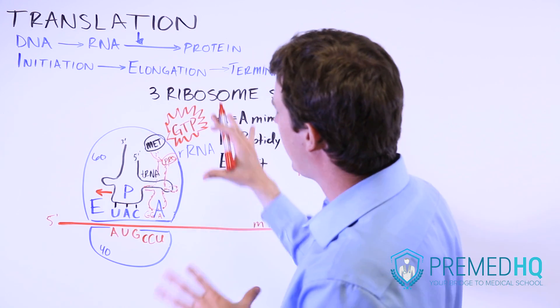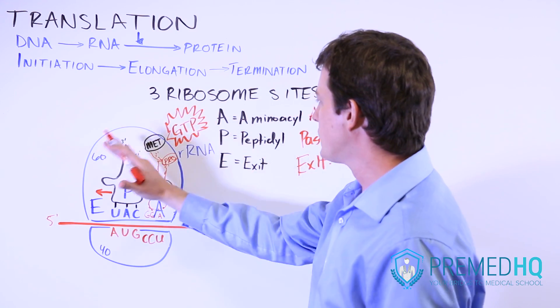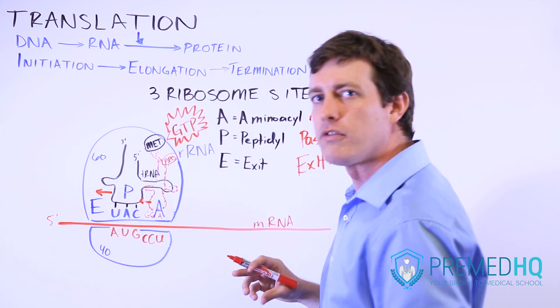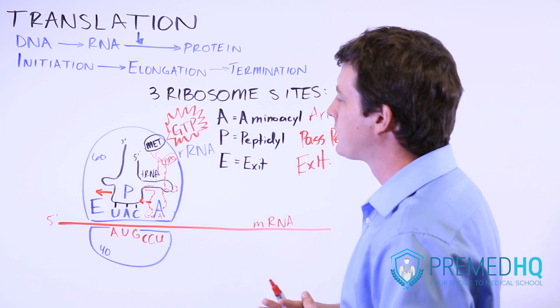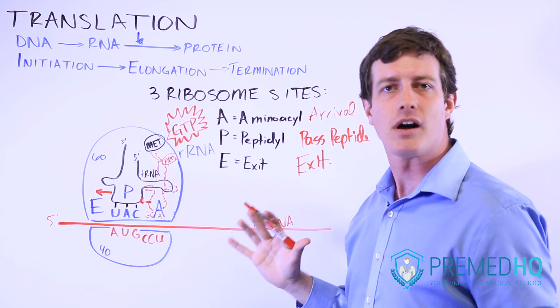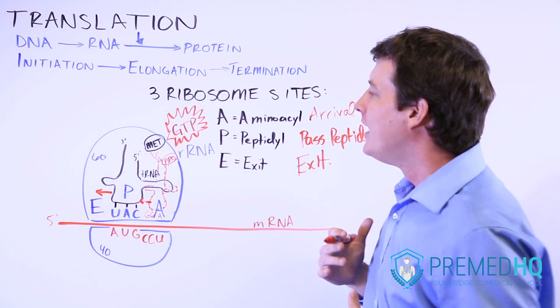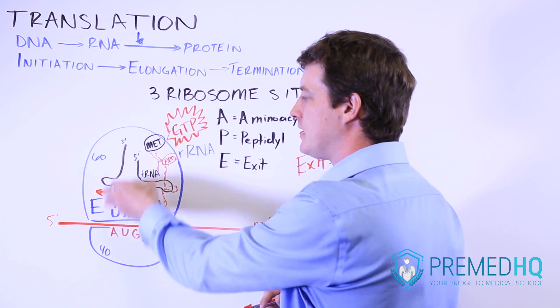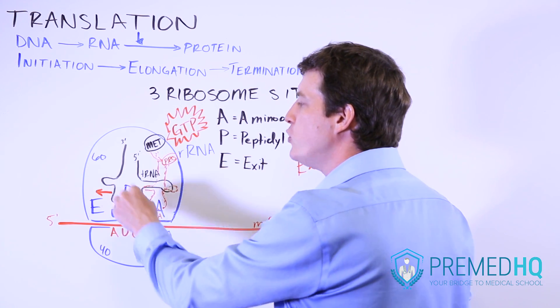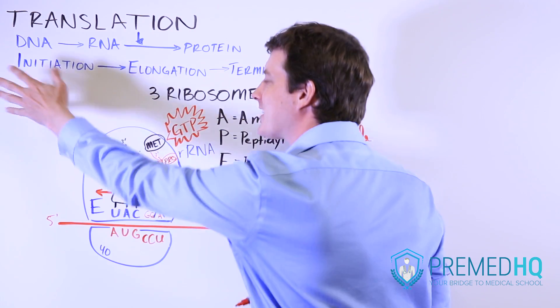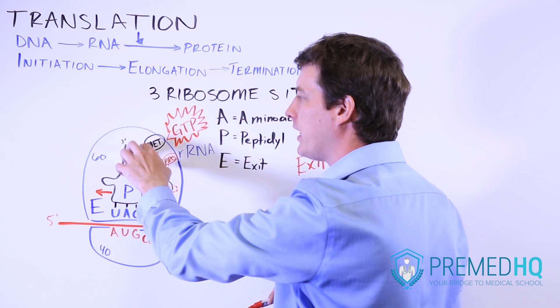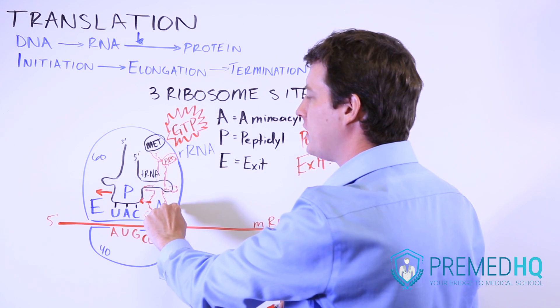And at the same time as this pass is occurring, the one in the A site will move over to the P site. And so essentially it's all one concerted process; it happens in concert. And all of the things that occur is that the tRNA will move over to the E site and exit as it passes its methionine residue over to the A site.